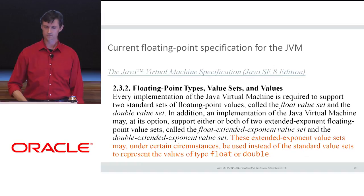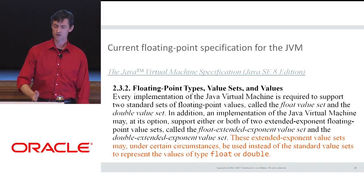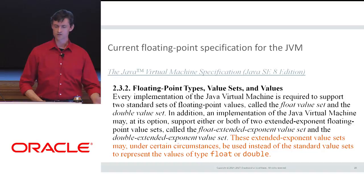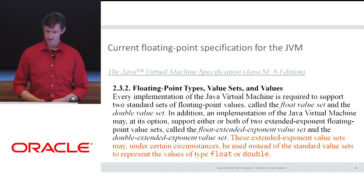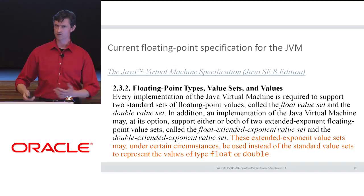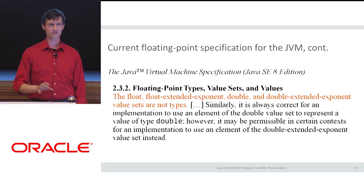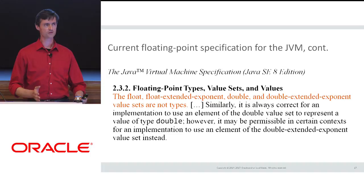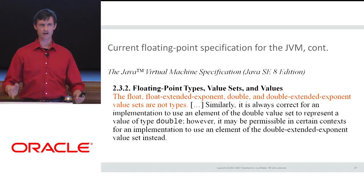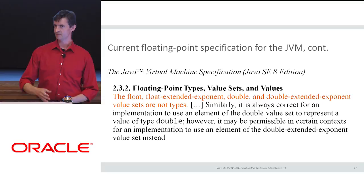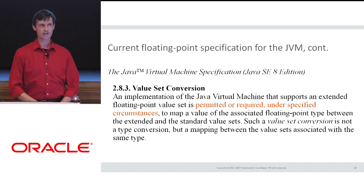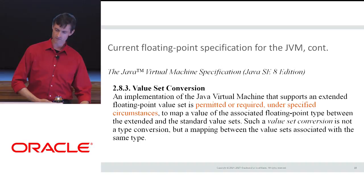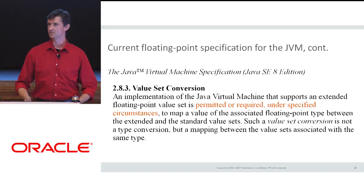If you look at the virtual machine specifications since 1.2, things are not quite as simple. There's a discussion of value sets — the spec starts talking about extended exponents, meaning sometimes you can use more exponent range than just the float or double. Importantly, these value sets are not types. This is very strange: the first sentence in a course on type theory is usually 'a type is a set of values,' but here in the VM spec, a type is a set of a set of values. There are conversions defined among these value sets — sometimes permitted, sometimes required — allowing more wiggle room in the spec.